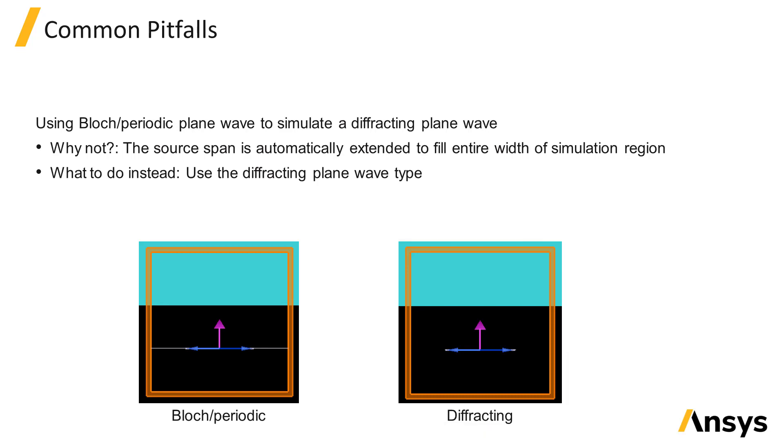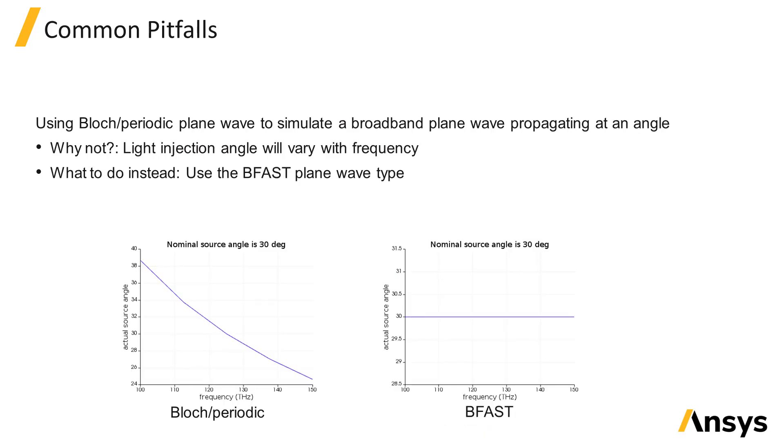The next example is using the Bloch periodic plane wave type to simulate a broadband source traveling at an angle. As we saw previously, when you do this, the light propagation angle will vary with frequency. Instead, you can use the BFAST plane wave to inject light at a constant angle over all wavelengths.